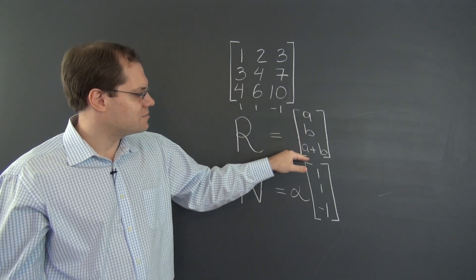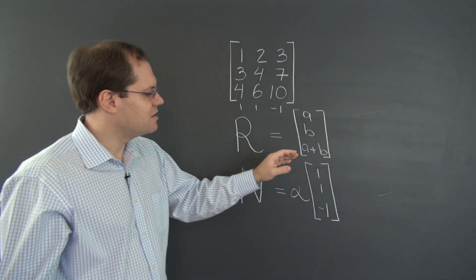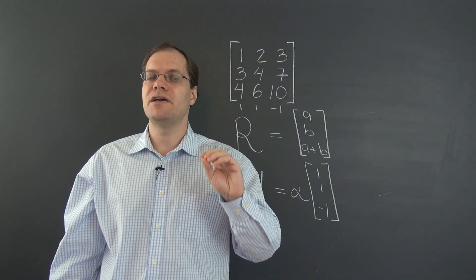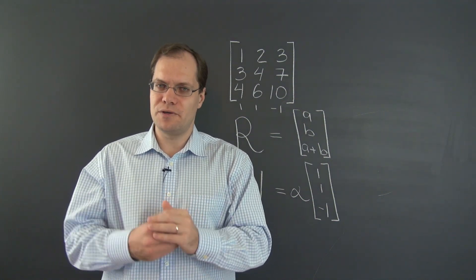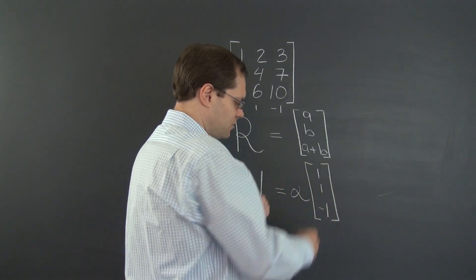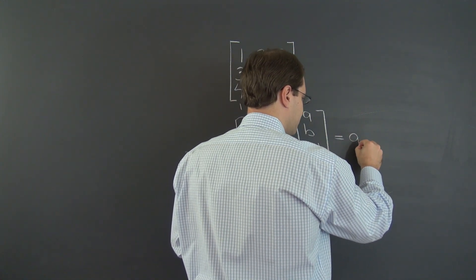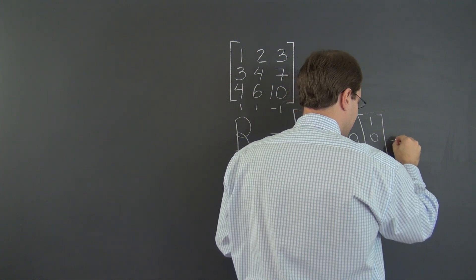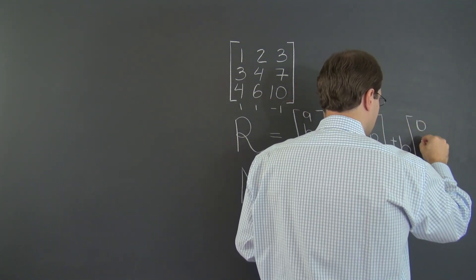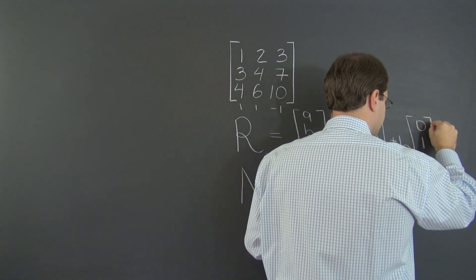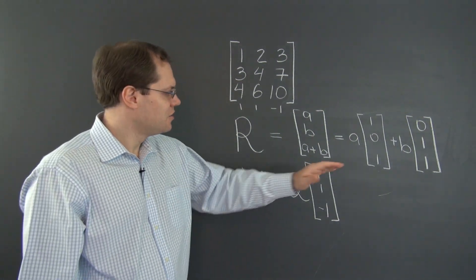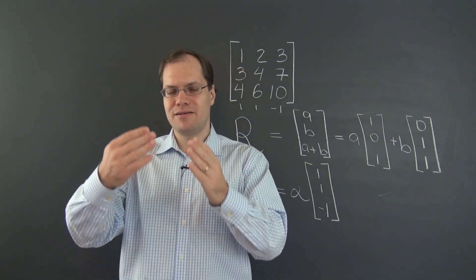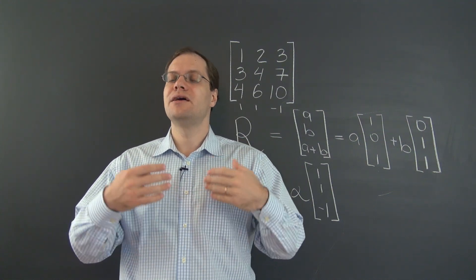So the column space consists of vectors where any number can be the first entry, any number the second, but the last entry must be the sum of the first two. Here is the column space, and here is the null space. Some people prefer writing the column space in a set-description format — I do, because it's most conducive to translating back into words: last entry is the sum of the first two. But if you prefer, you can write this as a times (1, 0, 1) plus b times (0, 1, 1). Both take advantage of the same property — the last column or row being the sum of the first two — but they do it in completely different ways.